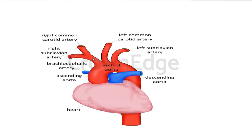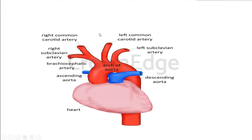The brachiocephalic artery divides into right subclavian and right common carotid. Note the difference: the right common carotid arises from the brachiocephalic artery, while the left common carotid is the direct branch from the arch of aorta. So the left common carotid has a straighter course than the right one, which has to make a curve before going straight up toward the neck region. The right and left common carotids move upward to the level of C4 vertebra, and then they divide into external and internal carotid arteries.